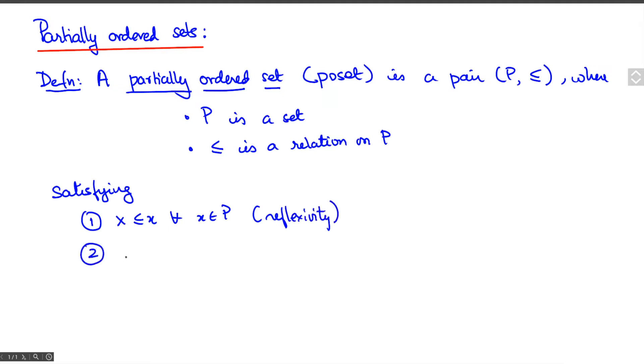The second is that if x ≤ y and y ≤ z, then x ≤ z for all x, y, z in P. This axiom is called transitivity of the relation.